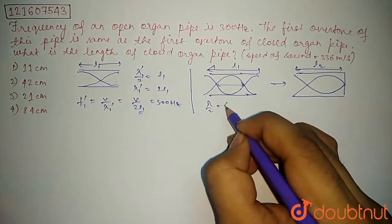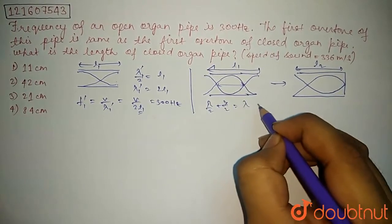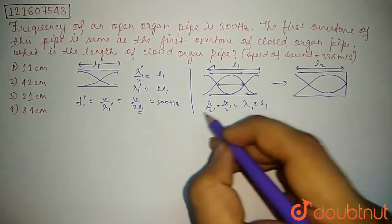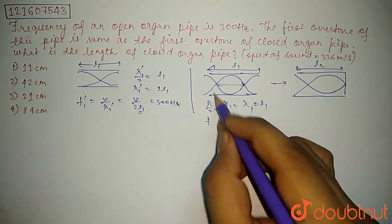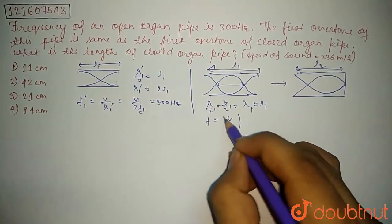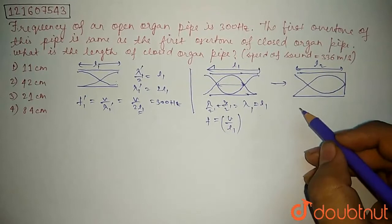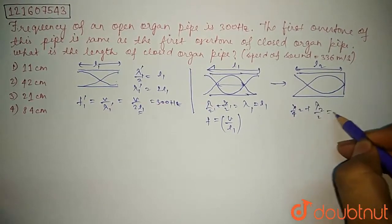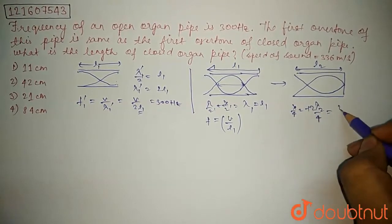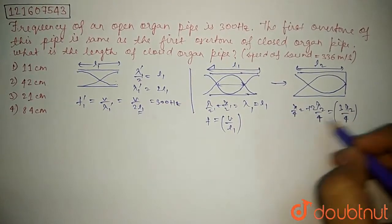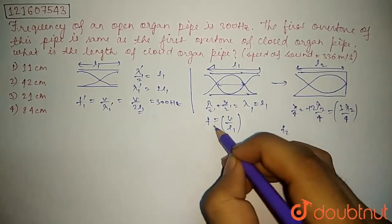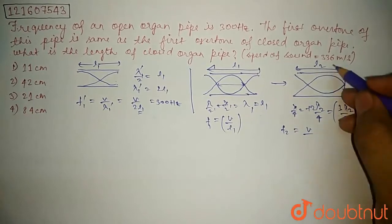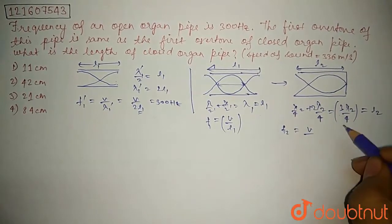So frequency V by lambda, and L1, and frequency V by lambda. Lambda by 4, lambda 2 by 4 plus lambda 2 by 2, which is equal to 3 lambda 2 by 4. So this frequency is V by lambda 2, and this is L2. So lambda 2 here is 4L2 by 3, is equal to 3V by 4L2.